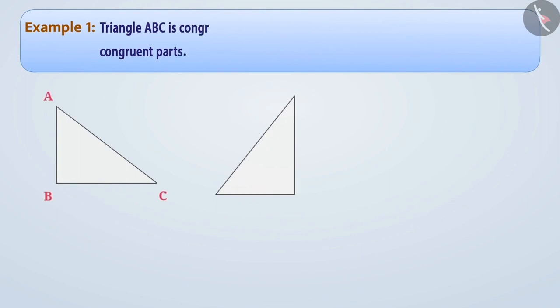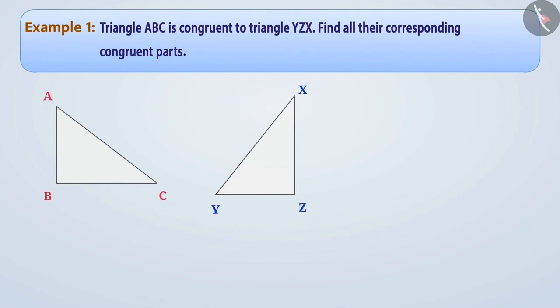Example 1. Two triangles, triangle ABC and triangle YZX, are congruent by matching or correspondence. Find all their corresponding congruent parts. We are given that the correspondence ABC is matching with YZX, and triangle ABC is congruent with triangle YZX. A, B, C is matching with YZX.